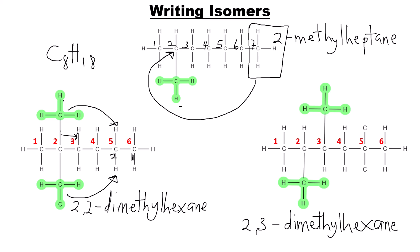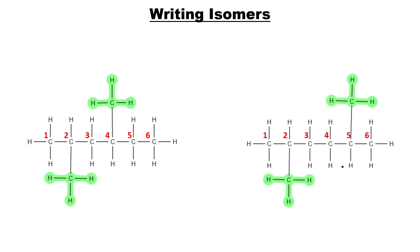Continuing the trend, we shift the methyl group from carbon three to carbon four to get 2,4-dimethylhexane. This gives us another isomer of C₈H₁₈.